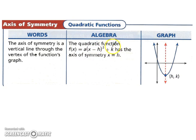So the quadratic function, if you have f of x equals a times the quantity x minus h squared plus k, has the axis of symmetry of x equals h. So if your quadratic function is written in this form, h is going to be your axis of symmetry.